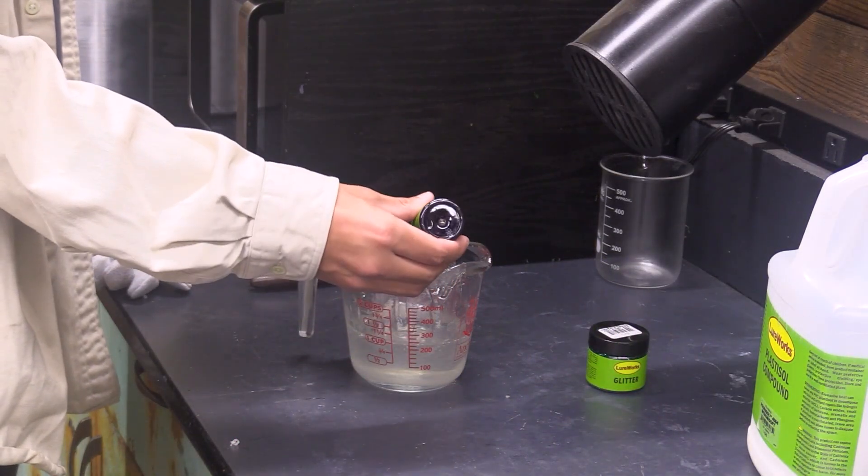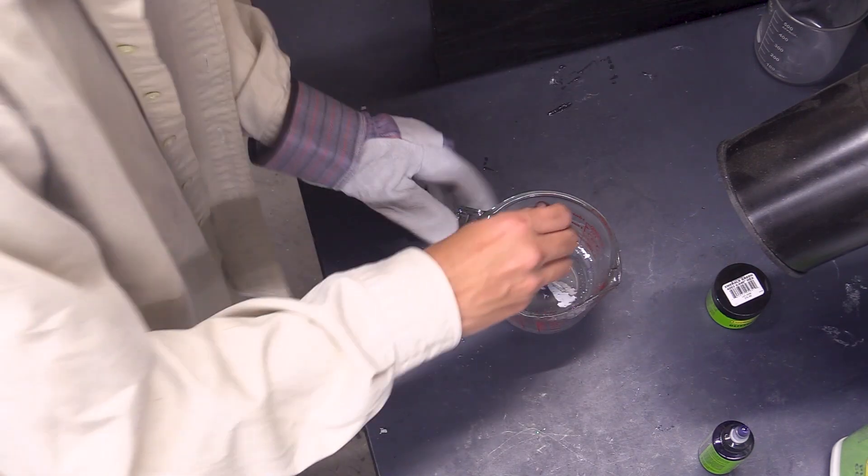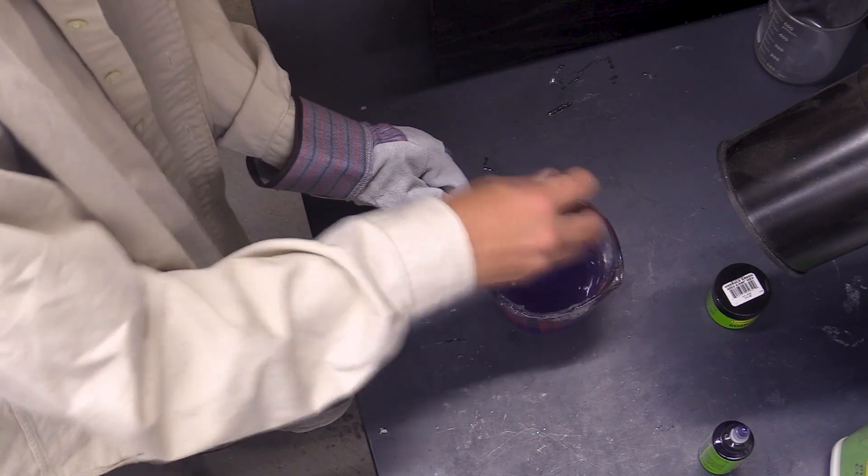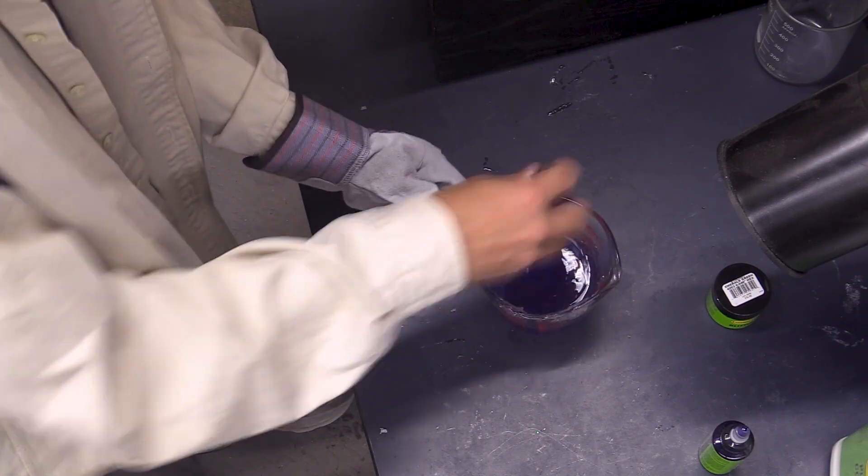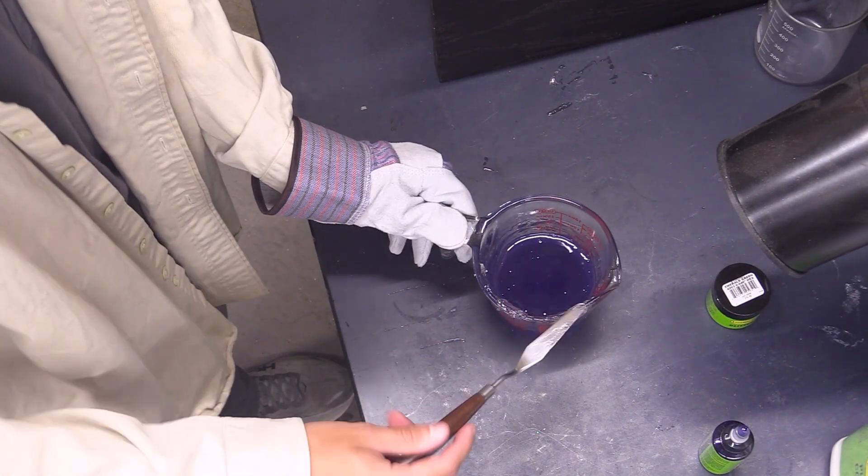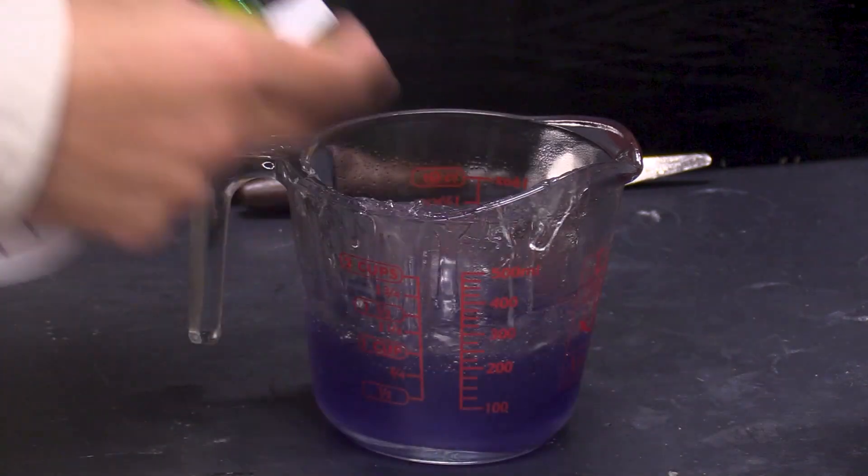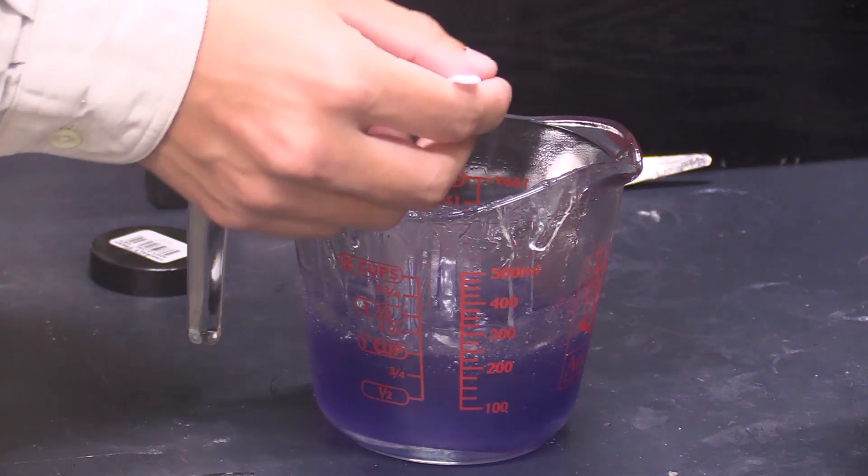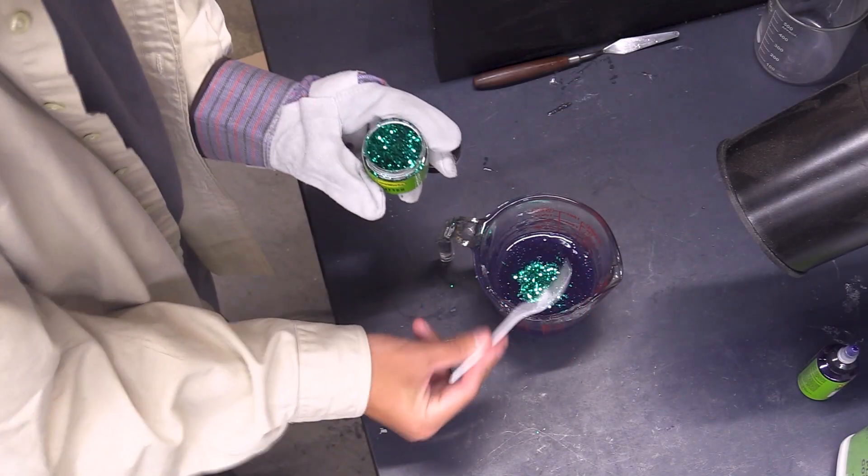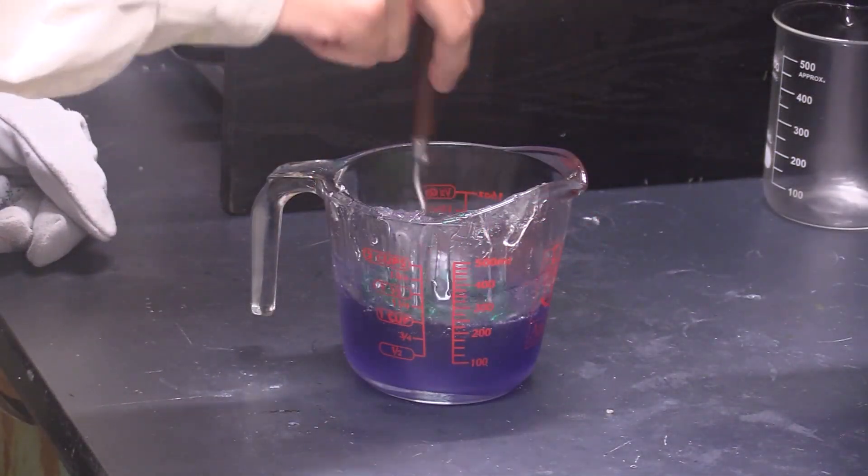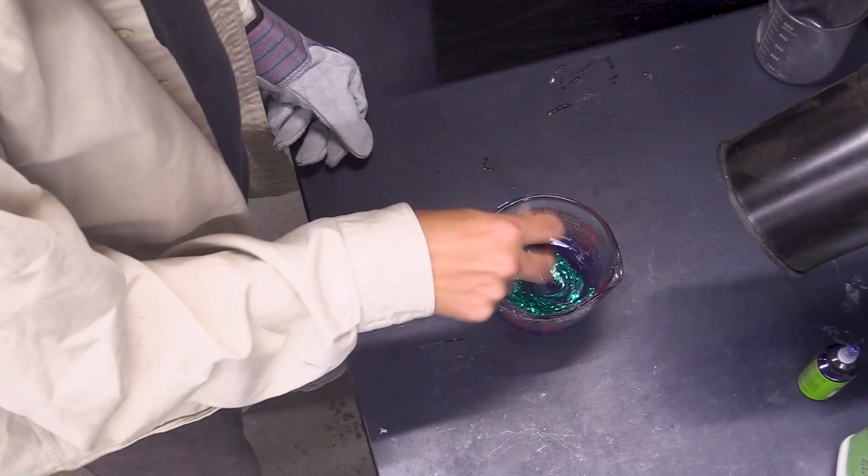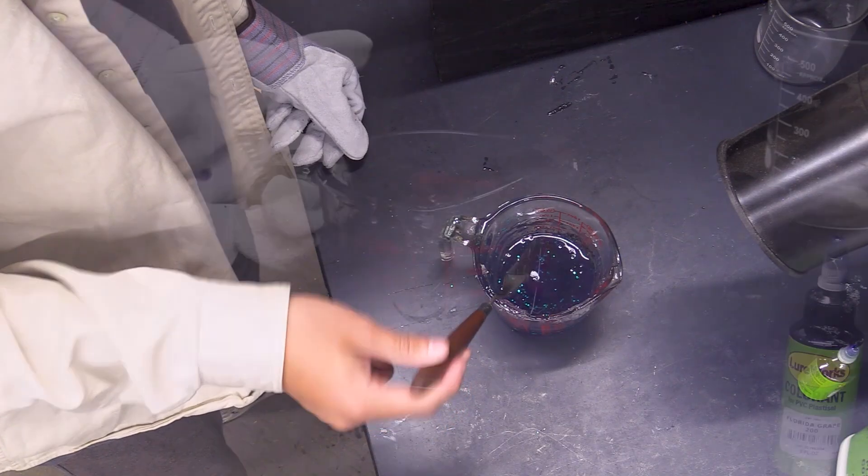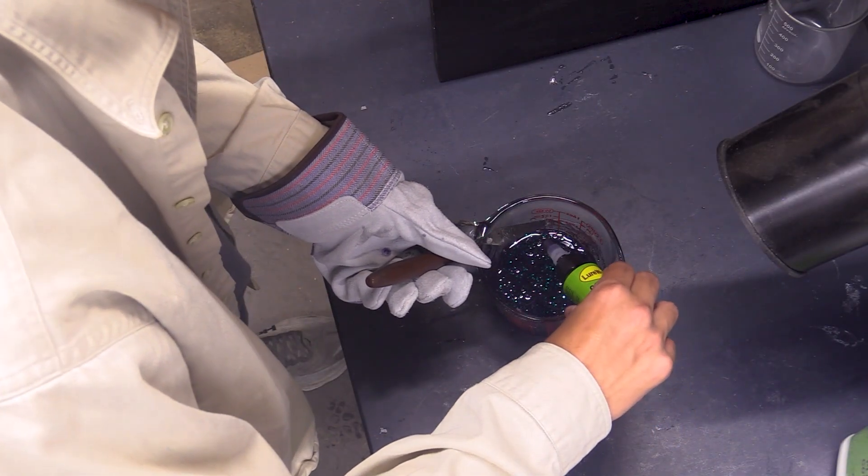Now we're going to add our color. Next you're just going to throw a little bit of glitter in. Now we're just going to mix all this together. Before we inject, add a little bit more color if you think it's needed and throw it back in the microwave for another 30 seconds.